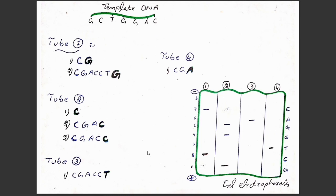In tube 3, the band is produced at a certain position and we know that thymine is the terminal nucleotide, attached to adenine, so we write adenine. The last DNA sequence consists of C, and when we run tube 1, we get the longest sequence. We compare this DNA strand with the actual DNA sequence — here G, here G, here C, here C — confirming the sequence.